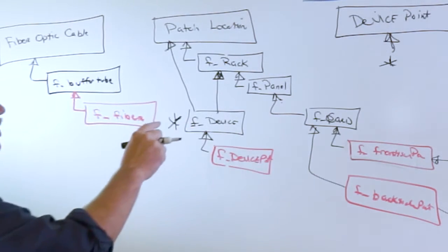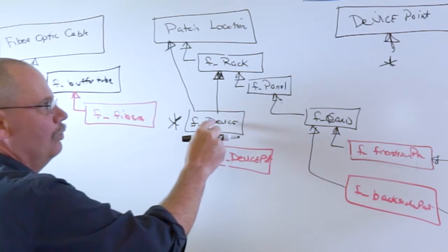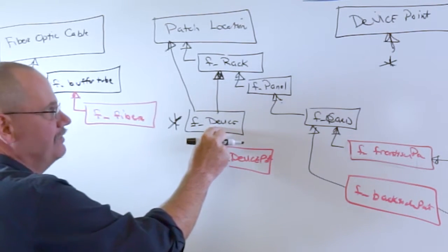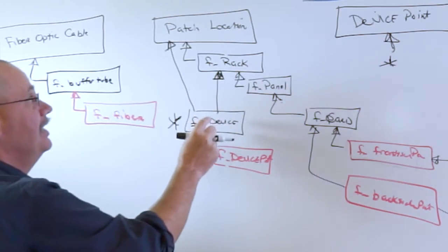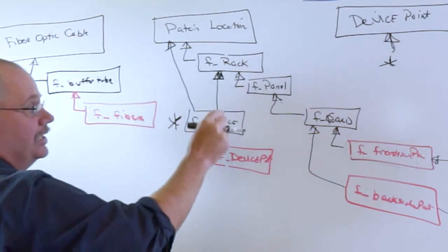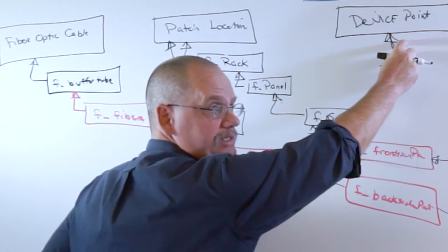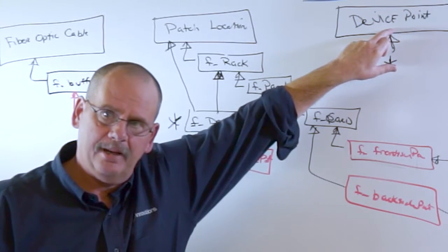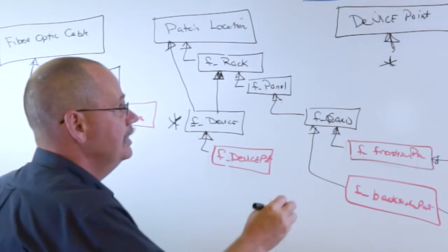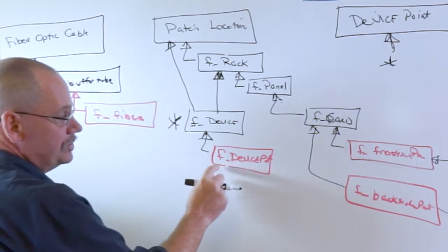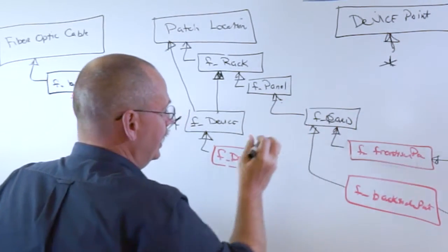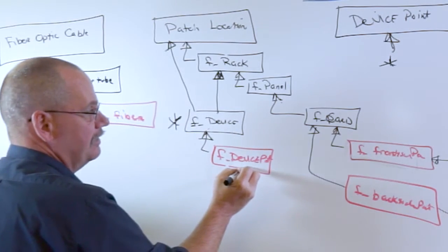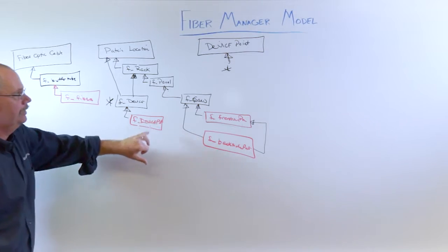So if you kind of summarize, we can put this F device inside a rack, we can put it inside the patch location, or we can put it inside this device point. The whole purpose of this device point feature class is we can show it on a map. So again, using that, the child of the F device is the device port.